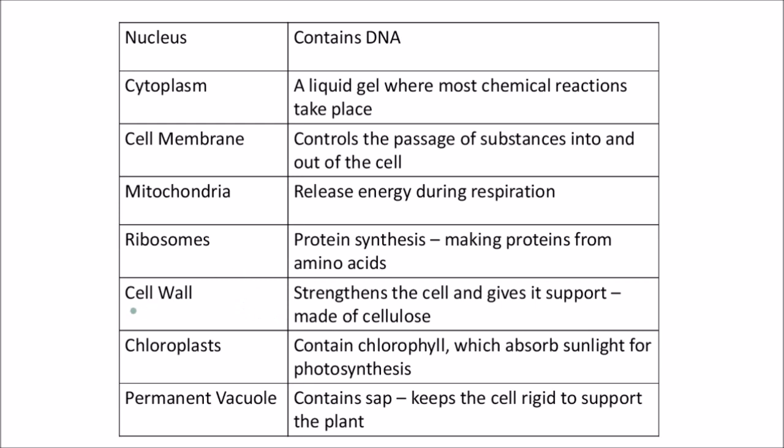The cell wall—I'll just underline this in green because only plants have it—this strengthens the cell and supports it, made of cellulose. Chloroplasts, again something that only plant cells would have, contain chlorophyll, and chlorophyll is a green pigment which absorbs sunlight. Permanent vacuole, which is the third thing that only plant cells have, contains sap and it's all about supporting the plant, keeping the cell rigid.